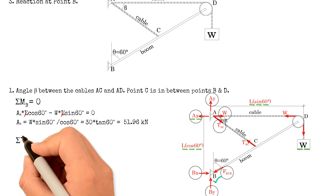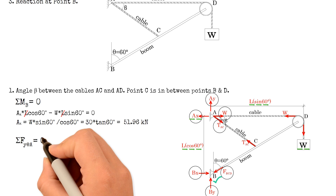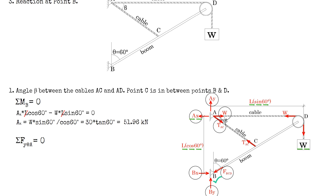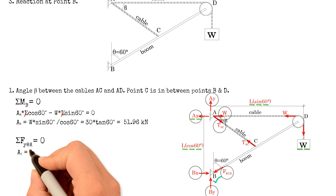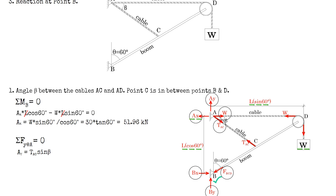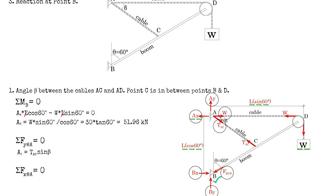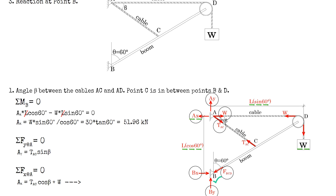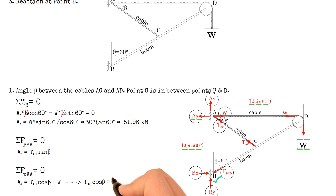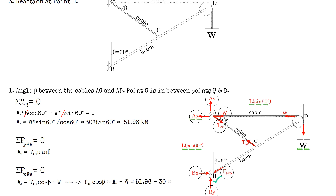Considering the summation of all forces on the Y-axis at point A equals zero, we have AY equals tension AC multiplied by sine of beta. Considering the summation of all forces on the X-axis at point A equals zero, we have AX equals tension AC times cosine of beta plus the weight of the block. So tension AC times cosine of beta equals 51.96 kN minus 30 kN, which equals 21.96 kN.